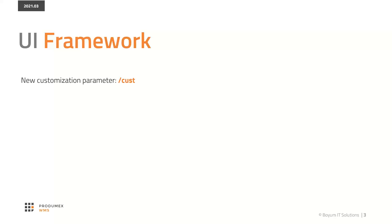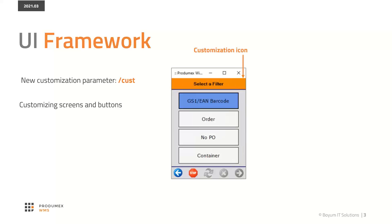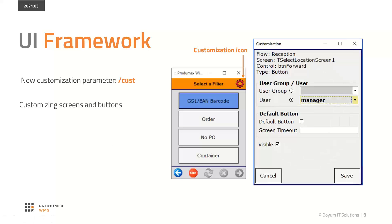There is a new customization parameter that we can use inside the bot file — I will show you later on the live system. When we start it up, it will allow customizing the screen and the buttons through a customization icon that will become visible when we start with this new parameter. When we click on this customization icon, we can change the behavior of that screen.